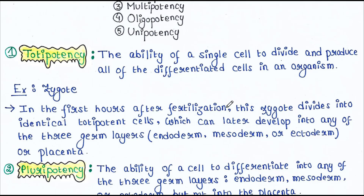These totipotent cells can later develop into any of the three germ layers — endoderm, mesoderm, and ectoderm — as well as the placenta. So both the placenta and the three germ layers are formed from a single zygote, and these three germ layers ultimately form the whole body. Totipotency is the highest potency of a cell.